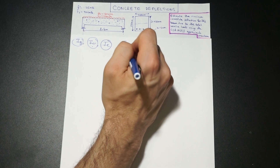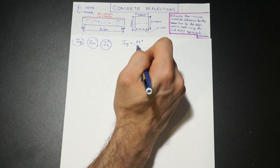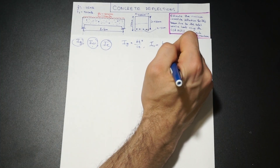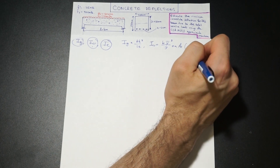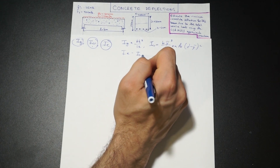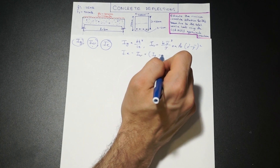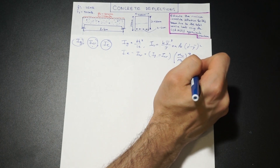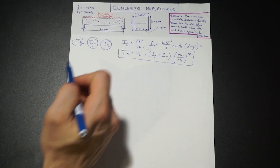We're going to need to find our gross moment of inertia, which is BH cubed over 12. We need to find our cracked moment of inertia using the relevant formula. And we have our effective moment of inertia, which is: I cracked plus (IG minus I cracked) times (cracking moment over maximum moment) cubed. To compute that, we need IG and ICR. Let's start with IG.